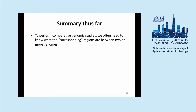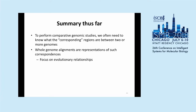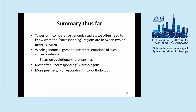Summary so far: to perform comparative genomic studies, we need to know the corresponding regions between genomes. Whole genome alignment focuses on evolutionary relationships, and correspondence usually refers to orthology. But if you want to be more precise in terms of positional correspondence, top orthology is what you're after.